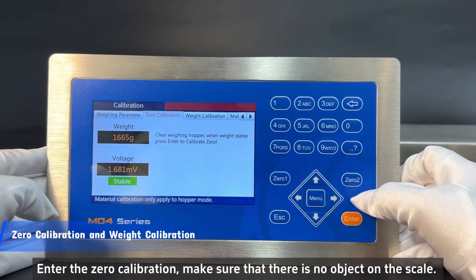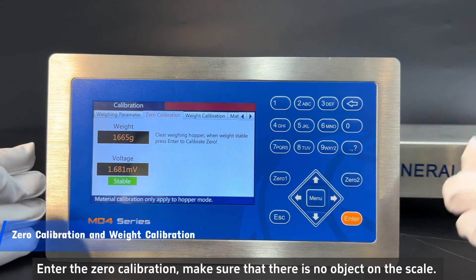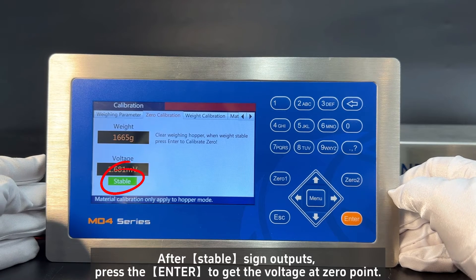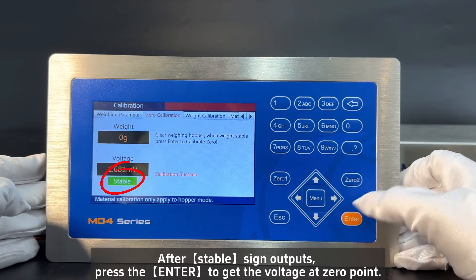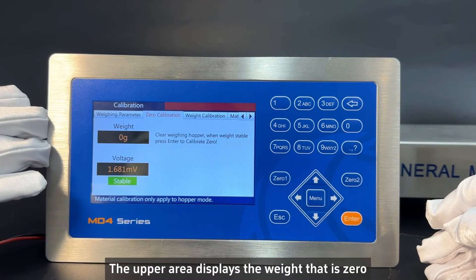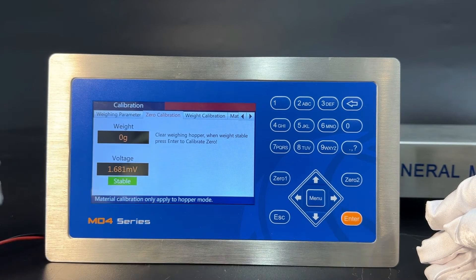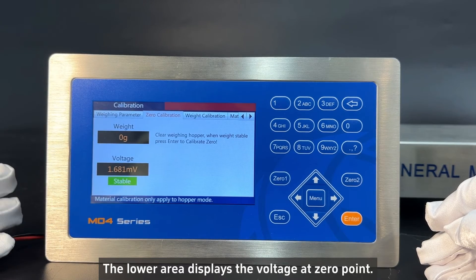Enter the zero calibration. Make sure that there is no object on the scale. After stable sign outputs, press the enter to get the voltage at zero point. The upper area displays the weight that is zero. The lower area displays the voltage at zero point.